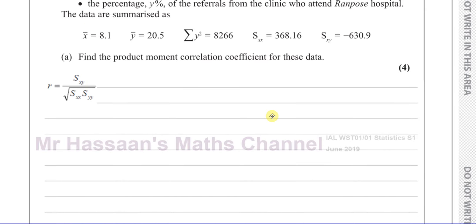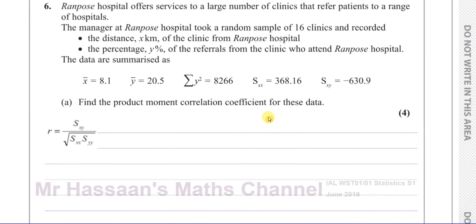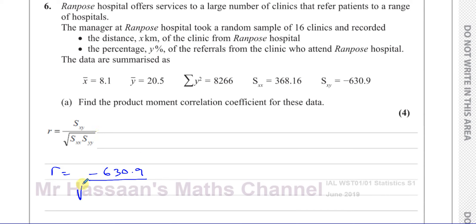So this is the formula we need. To use this formula we need Sxy, which we have. So R equals Sxy, which is negative 630.9, over the square root of Sxx times Syy. We have Sxx as 368.16. However, we don't have Syy.